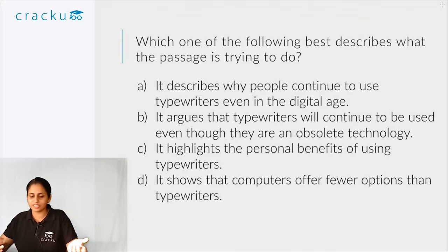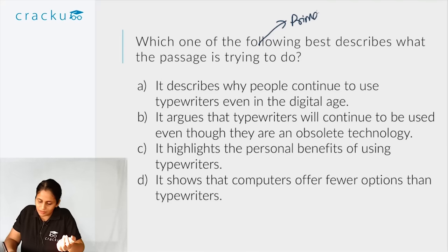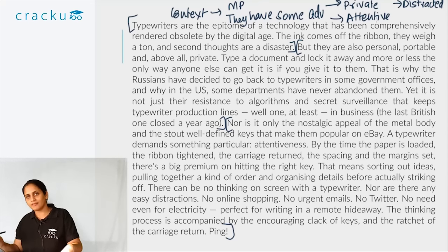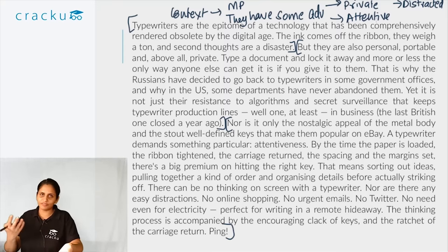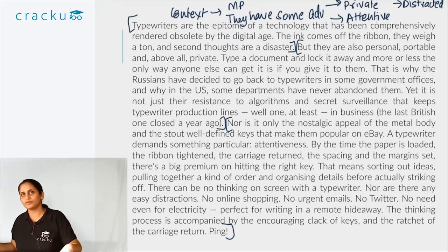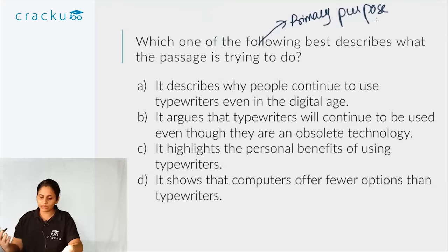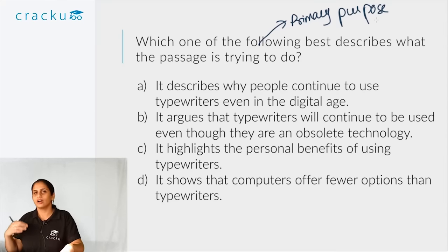Let's take a look at the first question: 'Which one of the following best describes what the passage is trying to do?' — this is asking for the primary purpose. The main point is that though typewriters have mostly been replaced, they offer advantages over computers, which is why some people continue to use them. The primary purpose is to inform the reader that the typewriter continues to be used for reasons where it gives benefits over computers. The author is describing or informing, not arguing a case.